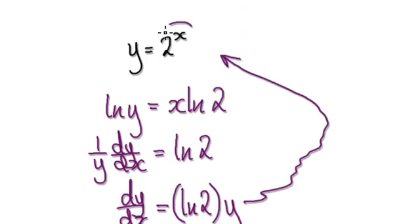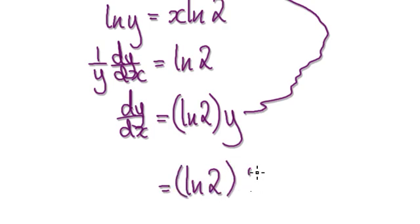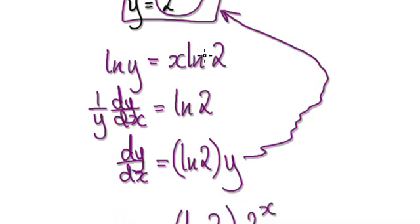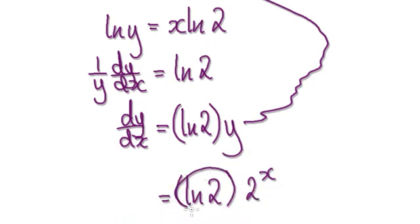So what is y? y is 2 to the power of x, so we can substitute it in. It becomes natural log of 2 times 2 to the power of x. So when you differentiate 2 to the power of x, it will give you a constant times itself.